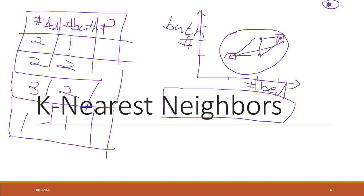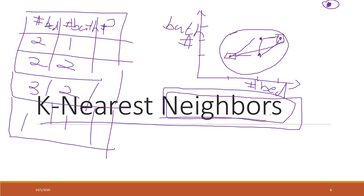So that is K-nearest neighbors. First we have to identify the neighbors — identifying a neighbor means that we map those sample points into an n-dimensional space, where each dimension has the value for each single column. So here we have two independent variables, so that is a two-dimensional space. If we have three independent variables, that will be a three-dimensional space. If we have 100 independent variables, that will be a 100-dimensional space.